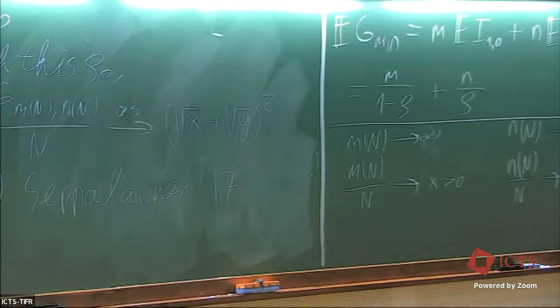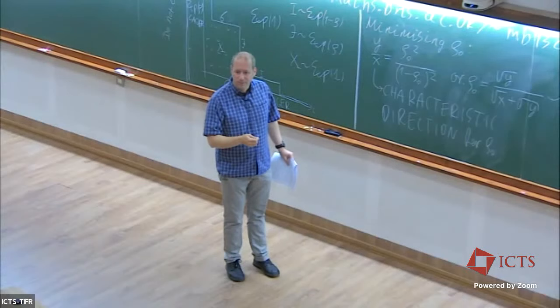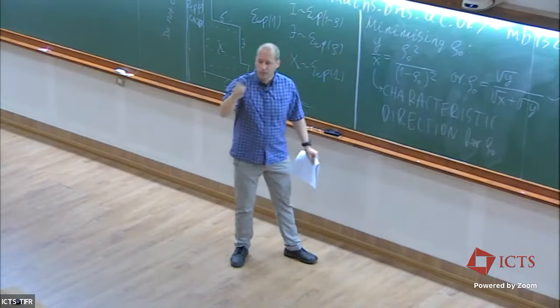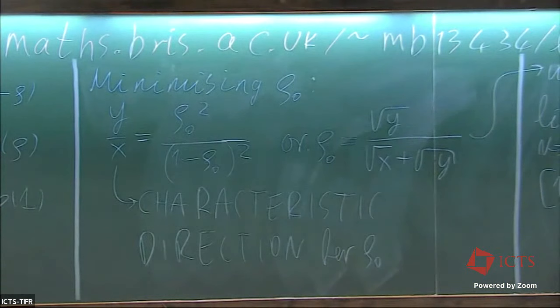The next comment before we proceed: there are connections with exclusion processes and M/M/1 queues. In those models there is a characteristic velocity connected to hydrodynamic scaling and second-class particles. That characteristic velocity exactly maps into this characteristic direction when you make the analogy between the models — so it's not by accident that this direction is important.